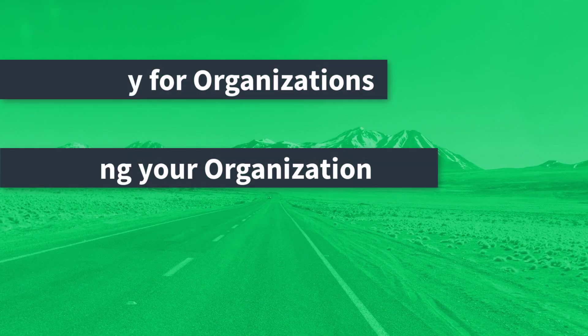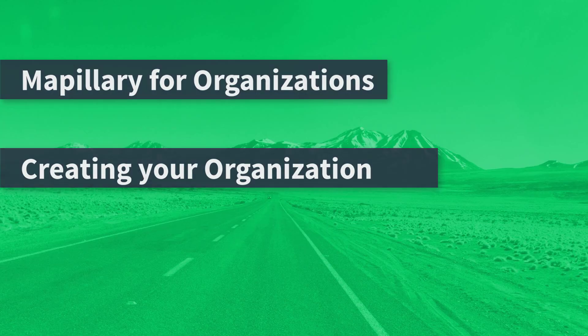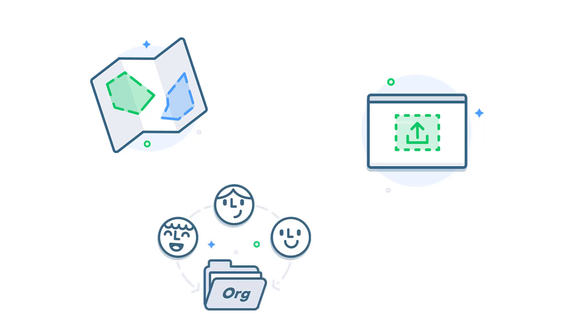In this video, we'll learn how to set up a Mapillary for Organizations account and assign team members. Mapillary for Organizations allows you to subscribe to Mapillary imagery and map data in your area of interest, or contribute imagery that's owned by your organization. It's a shared workspace where you and your team can work together with imagery and map data.